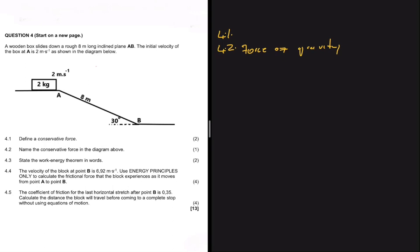Moving to 4.3, the question asks to state the work-energy theorem in words. We have W_net equals the change in E_k, and in words that goes as follows: the net work done on an object is equal to the object's change in kinetic energy. It's easy to see from the formula that the net work done on an object equals the object's change in kinetic energy.